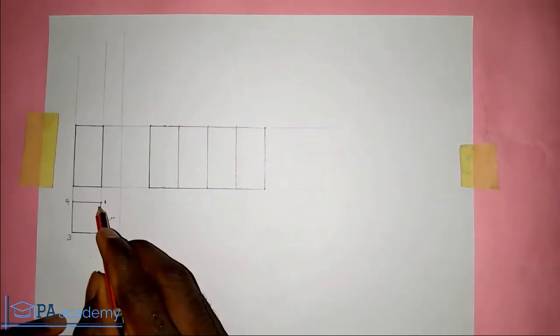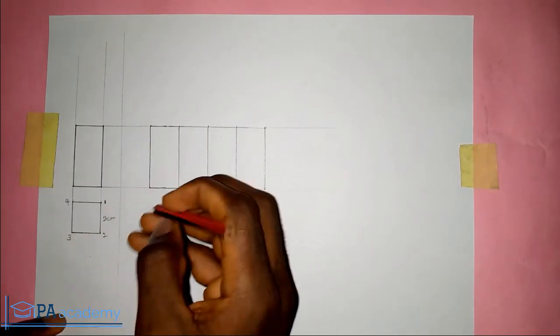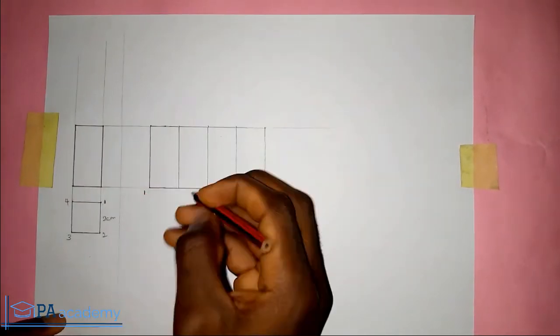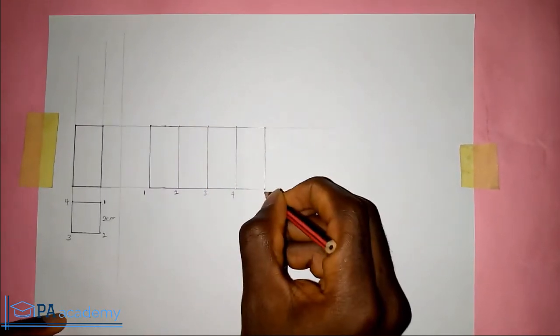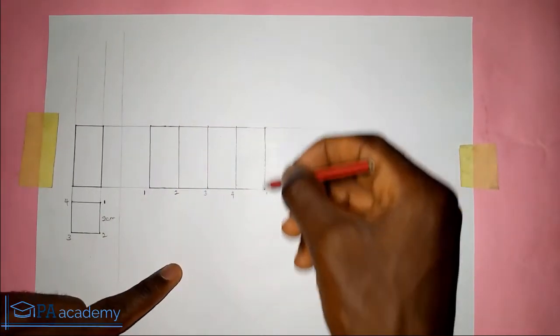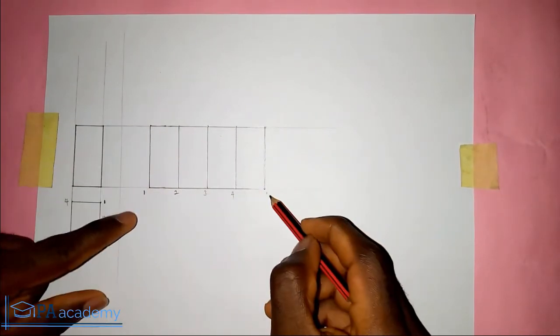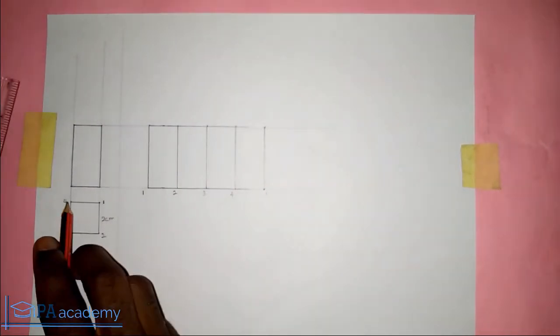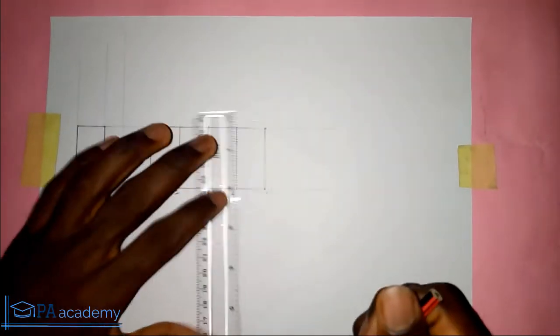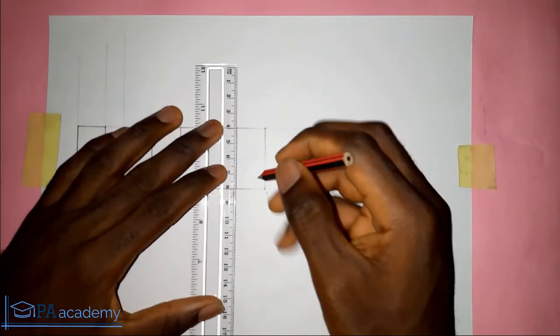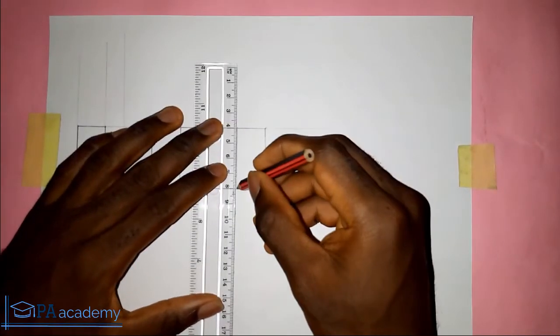So now this base that we have here, this is point 1. This is that of point 2, 3, 4, and then point 1. So this side of it will also be joining this side of it, that's why they are both point 1. So now let's draw this base at this side. The side is 2 cm each, so let's just measure 2 cm down.